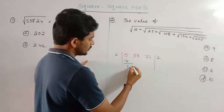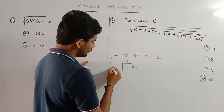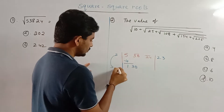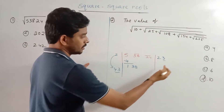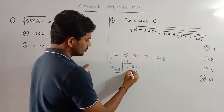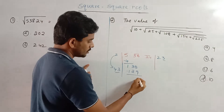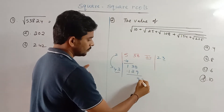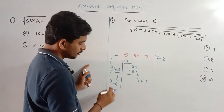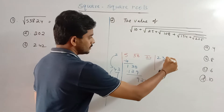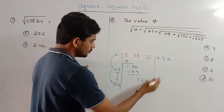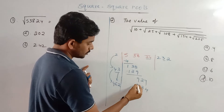Starting the digit-grouping division: groups are 5, 38, 24. Working step by step — first group gives 2, next number is 38, bringing down to get 138, then 129; next step brings down 24, giving 204, then 2042. From 12 to 48 is 9, remainder 0.